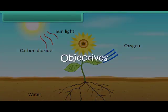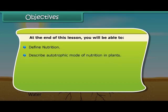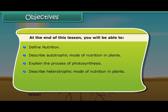Objectives. At the end of this lesson you will be able to: define nutrition, describe autotrophic mode of nutrition in plants, explain the process of photosynthesis, describe heterotrophic mode of nutrition in plants, and explain the different types of heterotrophic mode of nutrition.